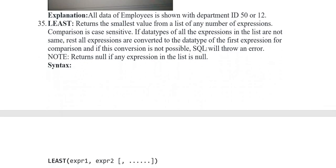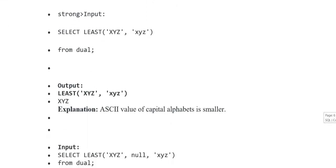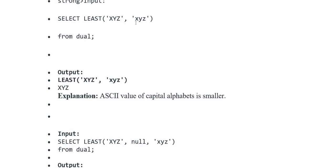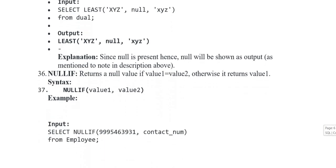Iskeba aata hai LEAST - return the smallest value from a list of any number of expressions. Comparison is case sensitive. If data types of all expressions in the list are not same, rest all expressions are converted to the data type of the first expression for comparison, and if this conversion is not possible, SQL will throw an error. Note: returns null if any expression in the list is null. Syntax: LEAST(expression_1, expression_2). Input: SELECT LEAST('xyz', higher_than, lower_than, capital_letter) FROM dual. Output represent kia gaya - value of capital with alphabets is smaller.